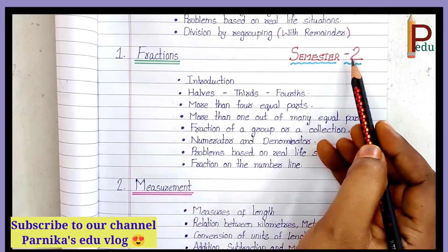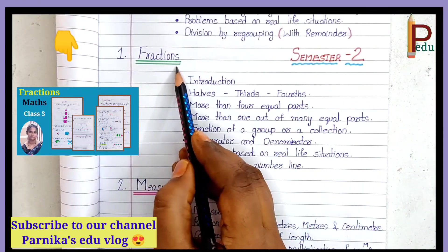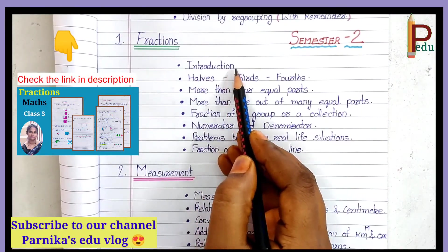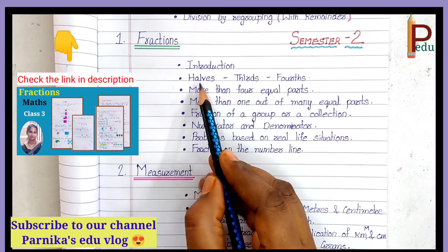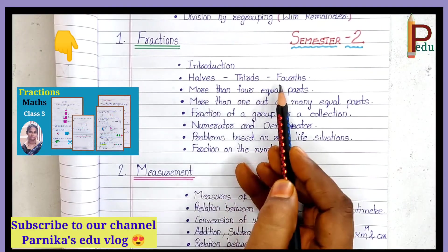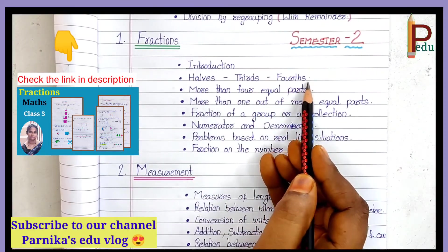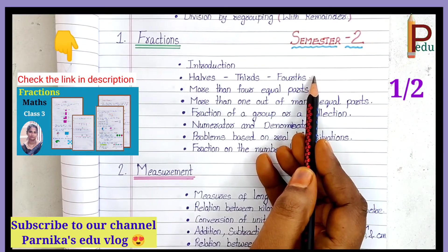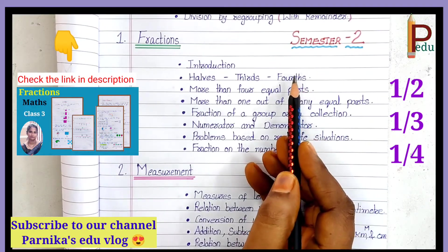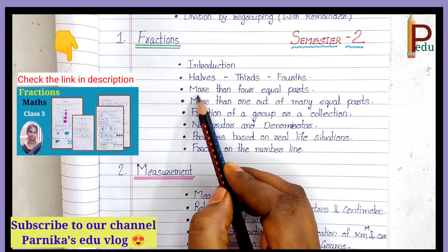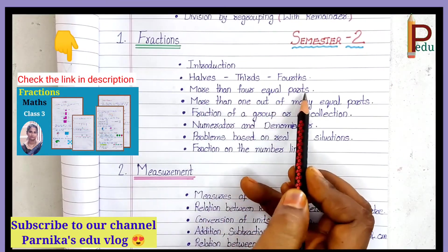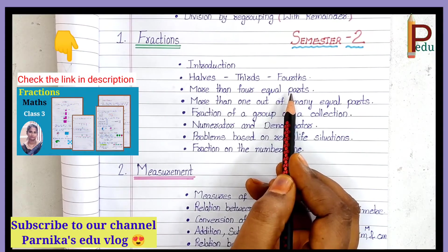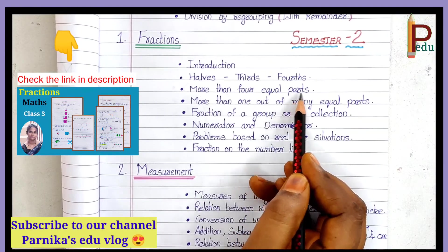Now Semester 2. The first chapter is Fractions. First, Introduction — what is a fraction. Next, Halves, Thirds, and Fourths — dividing one object into equal parts gives halves, thirds, or fourths. Then, More than Four Equal Parts — dividing one object into more equal parts, and how to write them in fraction form.